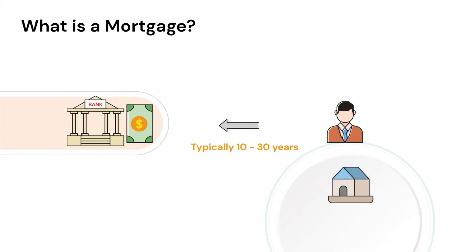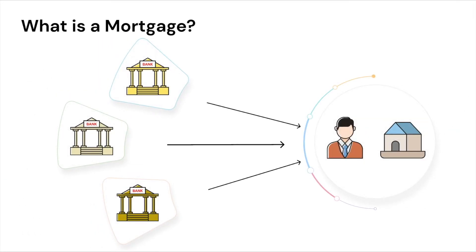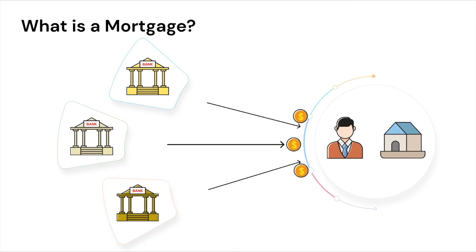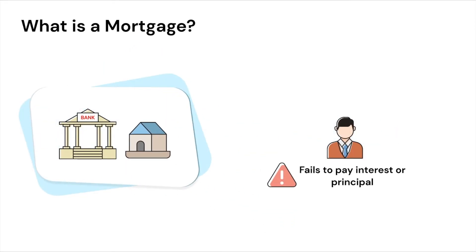Repayments happen gradually over many years, usually a period of 10 to 30 years. Banks and other lenders are typically interested in providing these mortgage loans since they are very profitable. The real estate asset is pledged to the lender against the loan, and the lender has the right to repossess the asset from the borrower if the borrower fails to repay the loan or the interest.